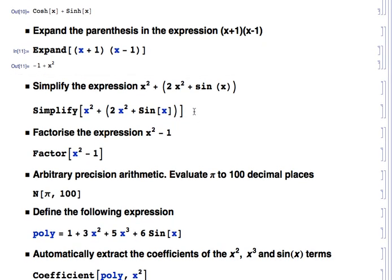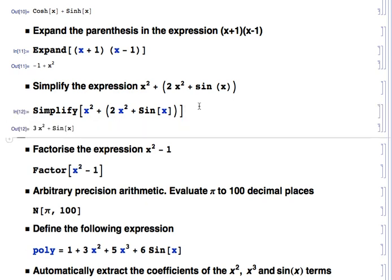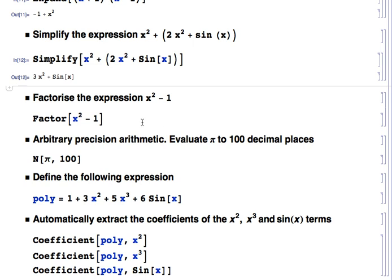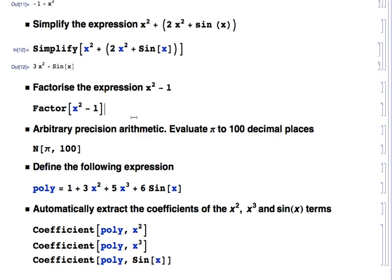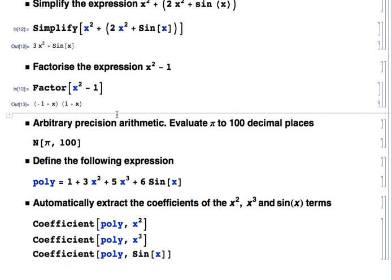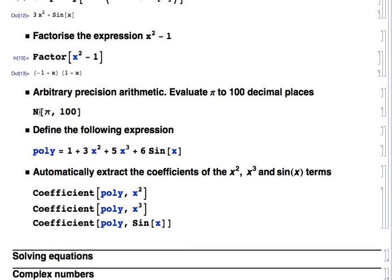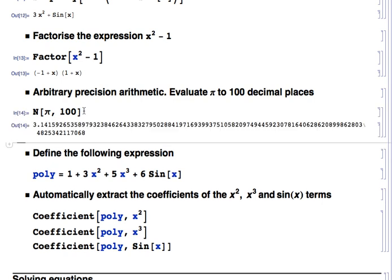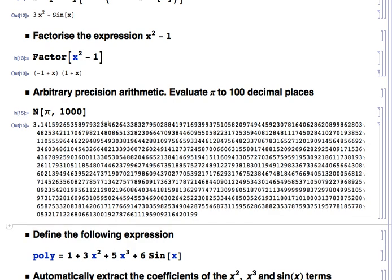Mathematica has a Simplify function that simplifies mathematical expressions — doing cancellations and grouping common terms. The Factor function does the opposite of Expand, so x squared minus 1 factors into x plus 1 times x minus 1. For arbitrary precision arithmetic, use the N function: evaluating pi to 100 decimal places gives you pi to 100 decimal places, and you can go to 1,000 with no problem.